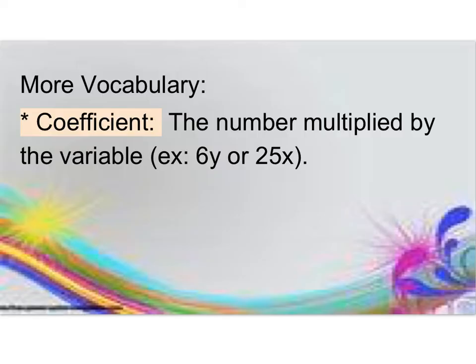Time for more math vocabulary. We've talked about coefficients before. A coefficient is the number that is multiplied by the variable. It's very important to remember that's multiplication. So here we have 6 times y, or here we have 25 times x.